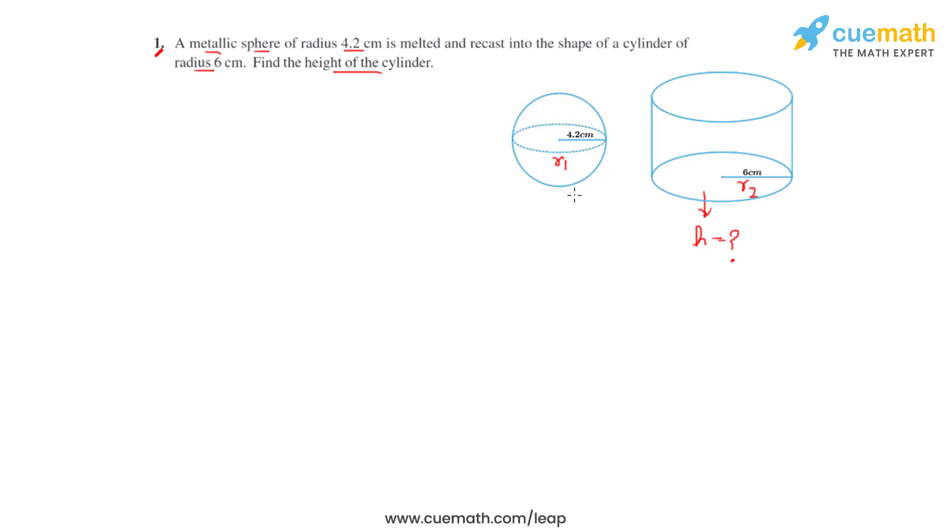Now what we have to do is find the height of the cylinder. When a solid is melted and recast into a different shape of a different solid, what remains common or the same is the volume. So what we can write is that the volume of the sphere will be equal to the volume of the cylinder. Let's substitute the formulas for each of these. Volume of a sphere is found by making use of the formula 4 by 3 pi r1 cube, which equals the volume of cylinder, and that will be pi r2 square h.